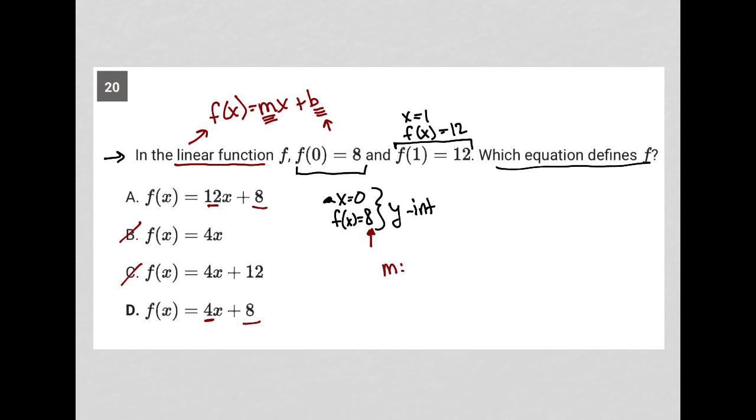You find the slope by finding the difference in y values over the difference in x values. So I have 0, 8. We're going to call that x1 and y1. And then I have 1, 12.